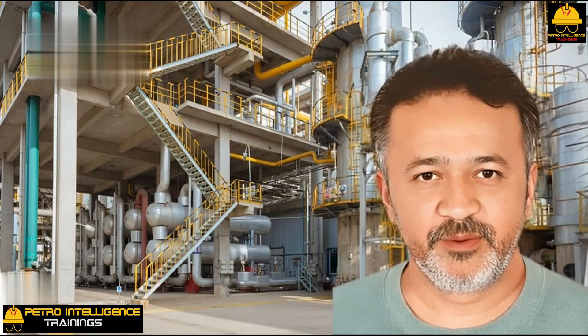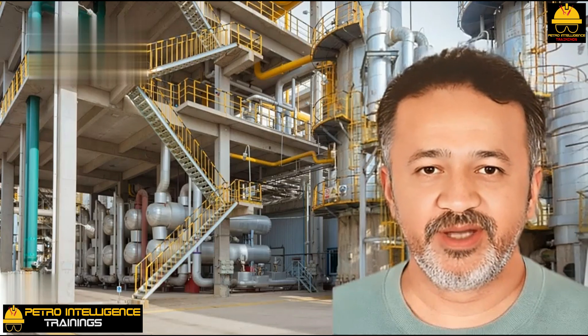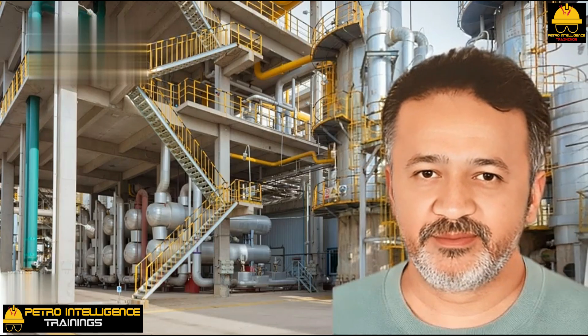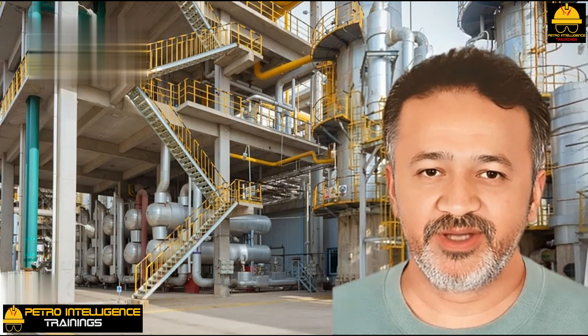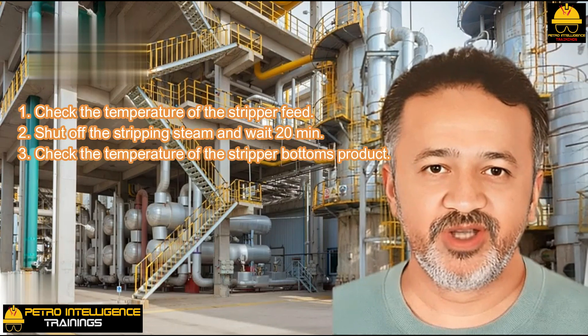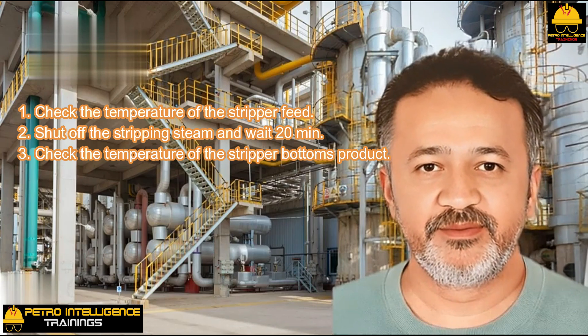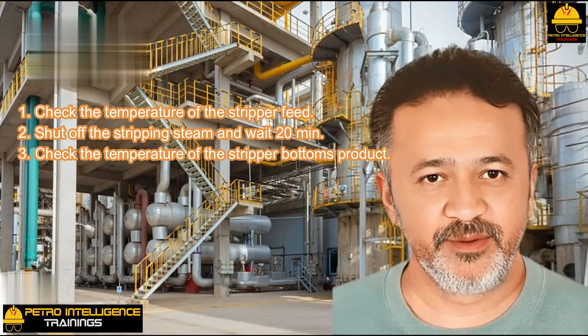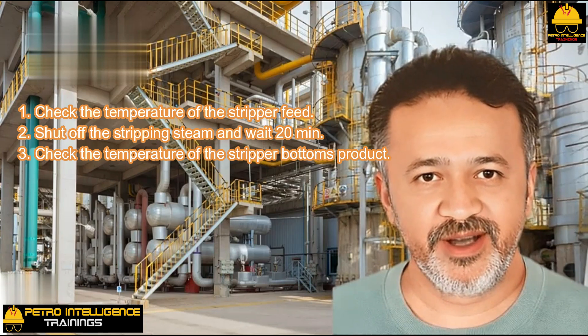Note that we have neglected the heat picked up by the steam in the preceding calculation. Often the steam flow is quite small compared to the stripper feed, so usually this effect may be disregarded. However, we should not neglect ambient heat losses. To determine the temperature drop due to ambient heat losses: first, check the temperature of the stripper feed; second, shut off the stripping steam and wait 20 minutes; third, check the temperature of the stripper bottoms product. The difference between the two temperatures represents the ambient heat loss. With no ambient heat loss, this temperature difference would be zero.